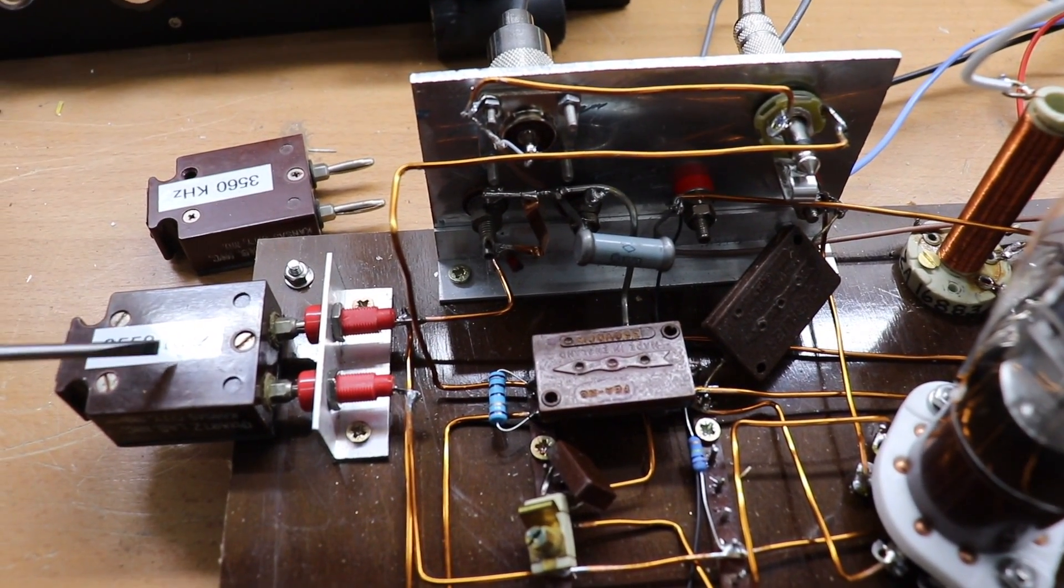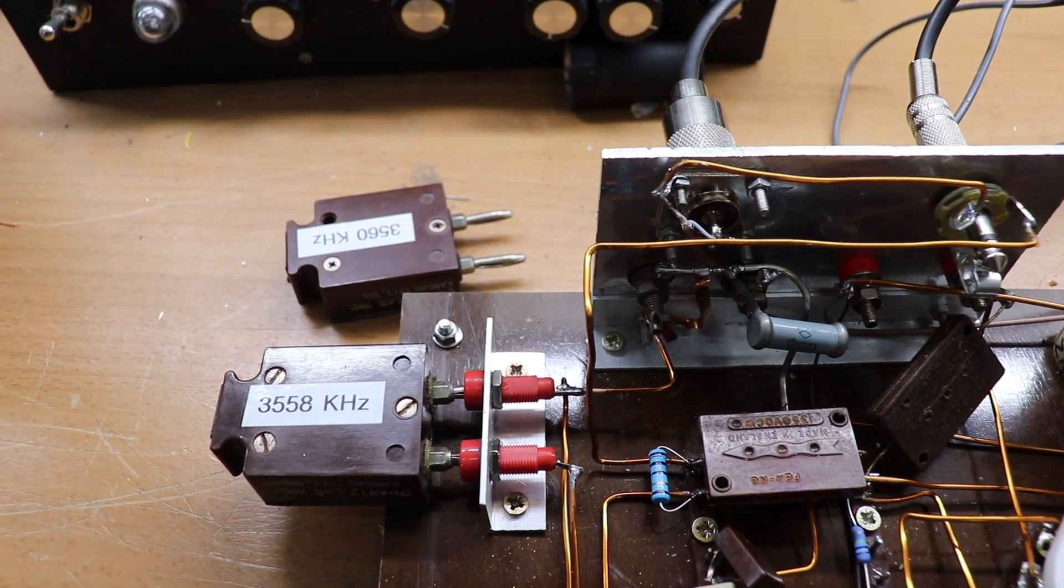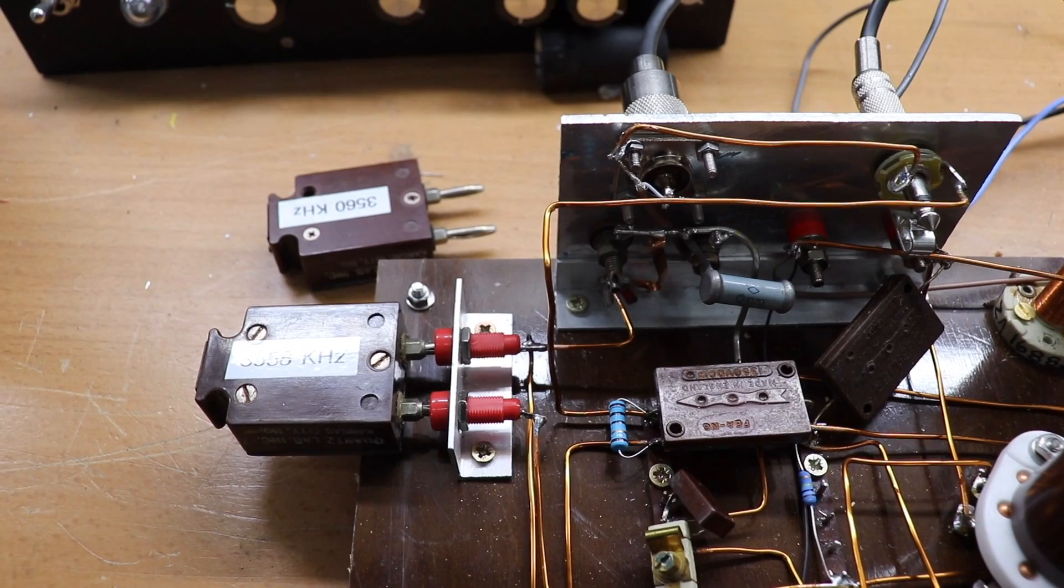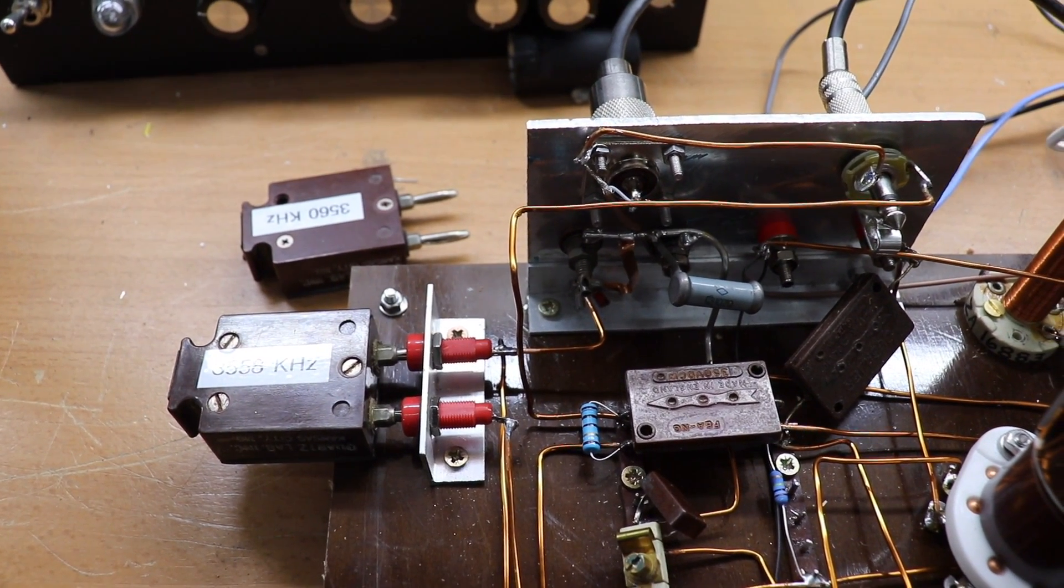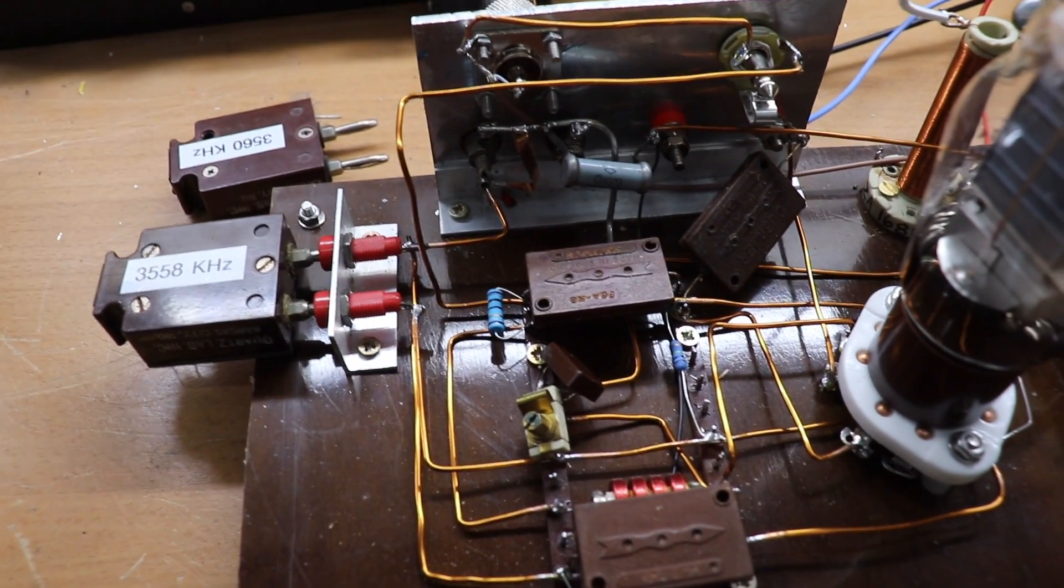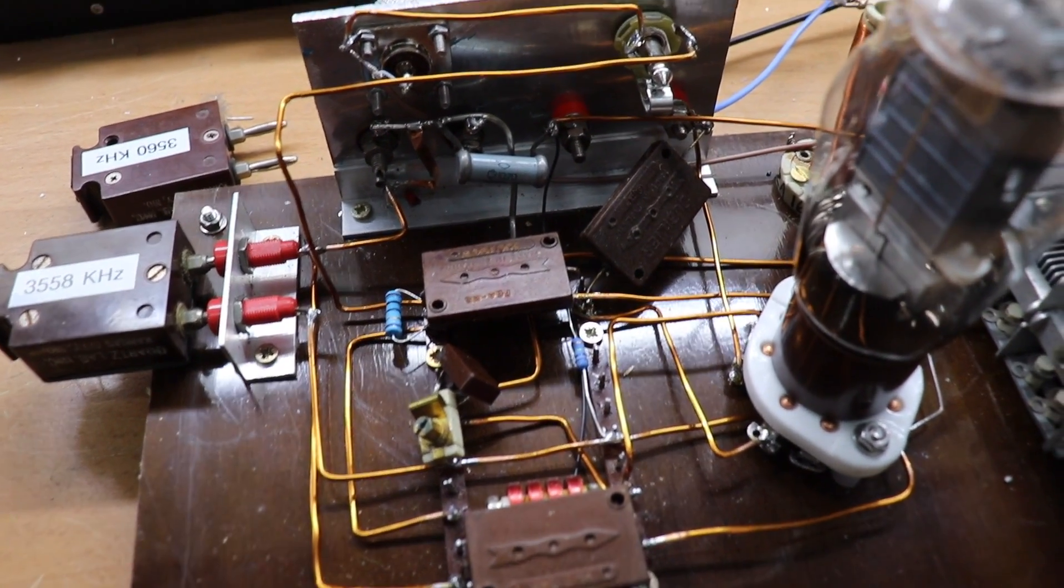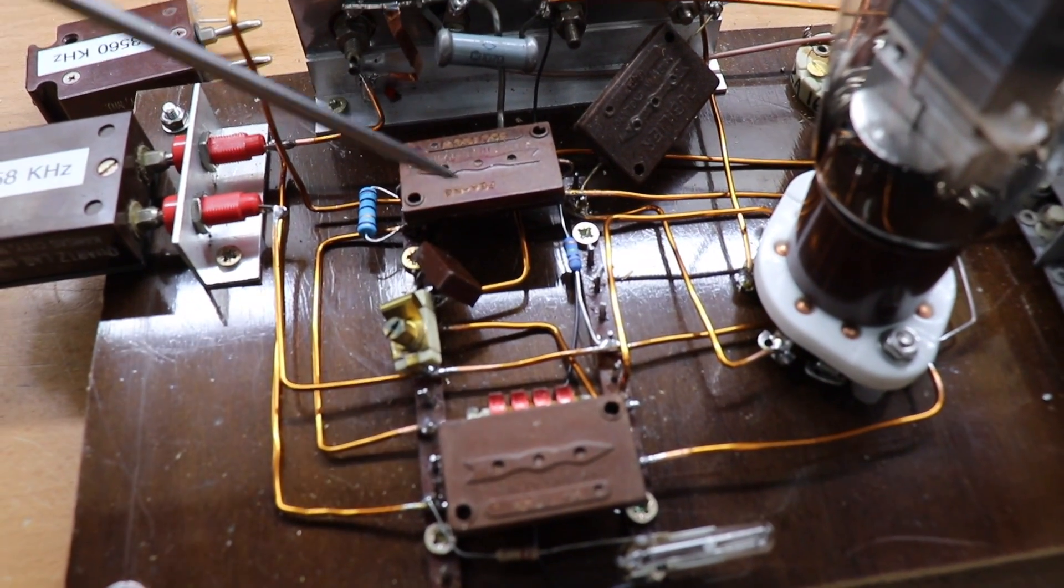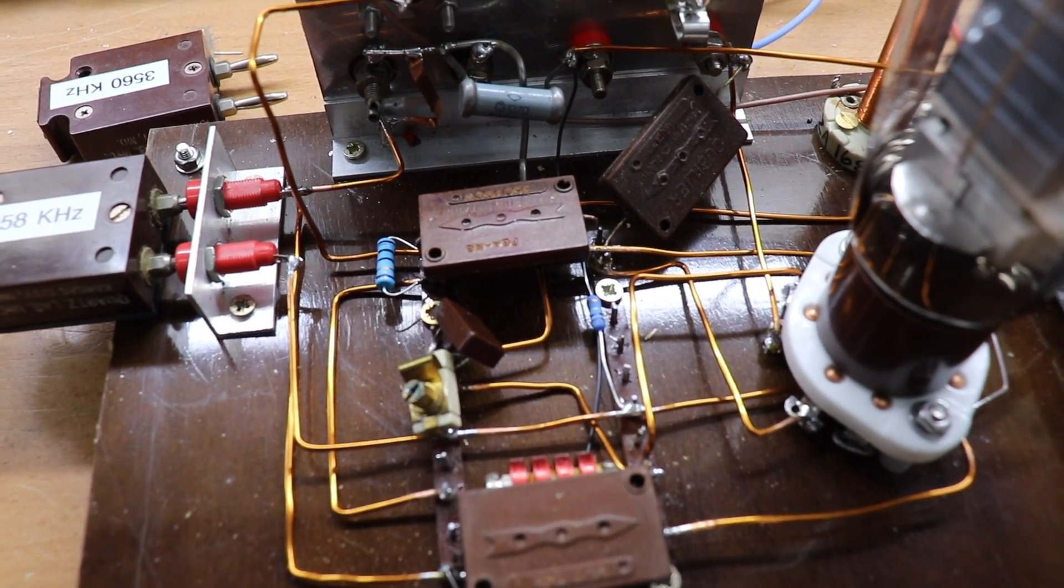That's our crystal. I've got one in good old-fashioned crystal holders. Got one crystal for 3.555 and another for 3.556 which are the frequencies that are good for low power CW.